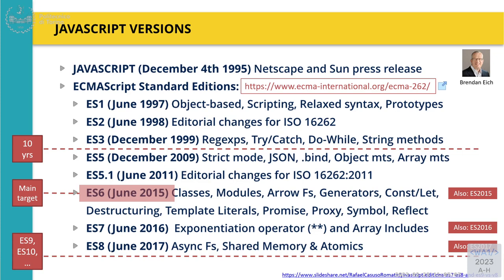The first versions of the standard were basically ignored by everybody. They were standardized by ECMA — ECMA International Organization, a Switzerland-based institution. They wrote the standards of a language called ECMAScript — not JavaScript, because JavaScript was a trademark by Netscape. Not many people call it ECMAScript today, but this would be the official name of the language. So the first versions were basically: OK, let's write down what is happening in the browsers.